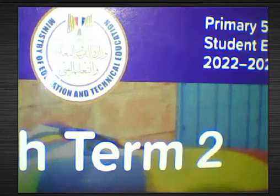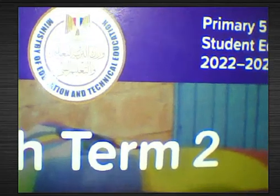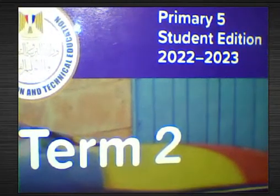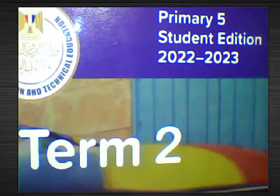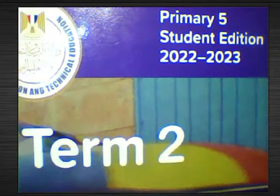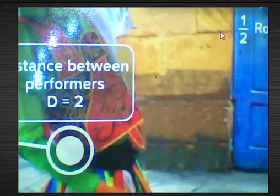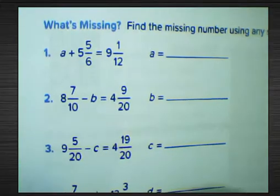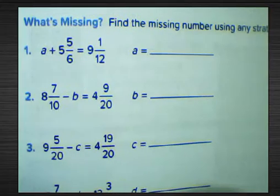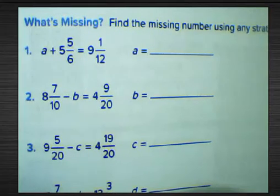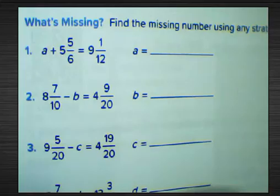Hello everyone. We will solve questions from the students book, Primary Five, Term Two. Open your book to page 39. We need to find the missing number using any strategy, and simplify if possible.